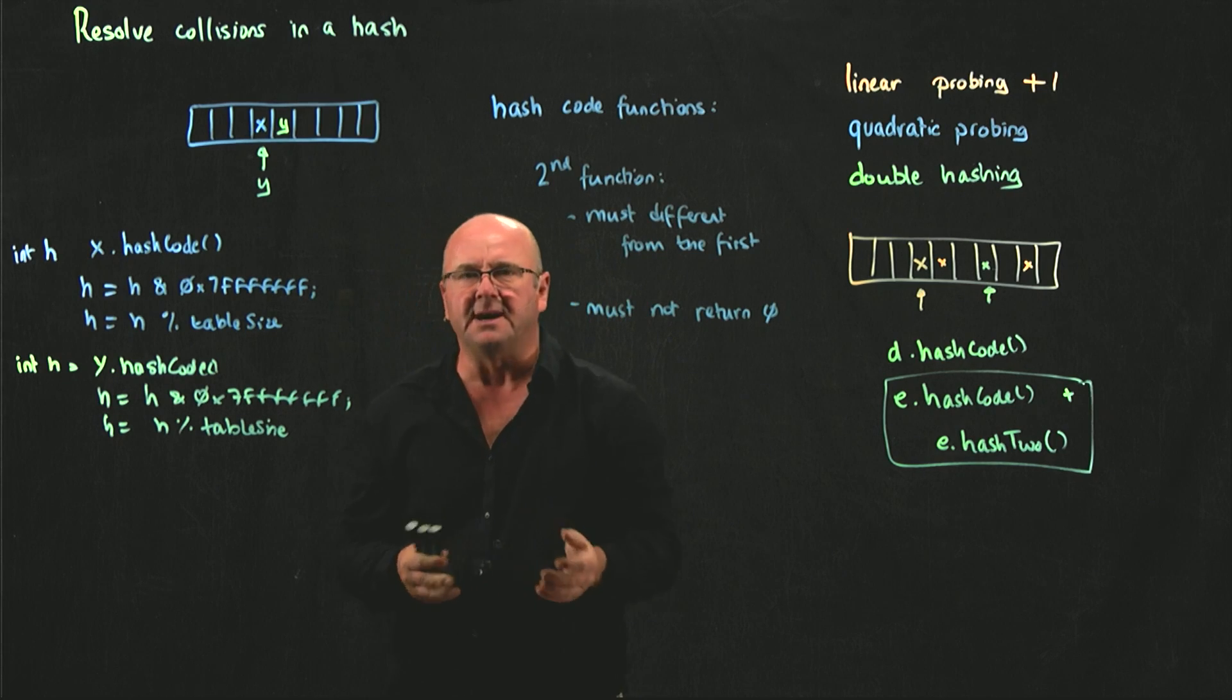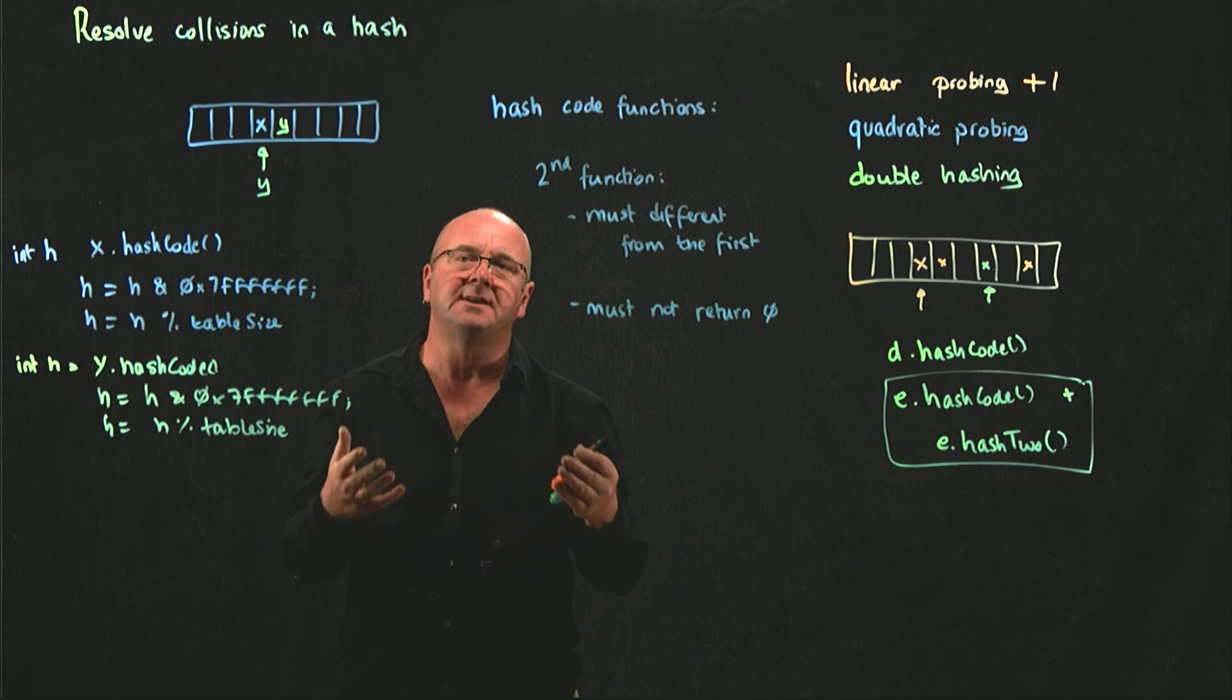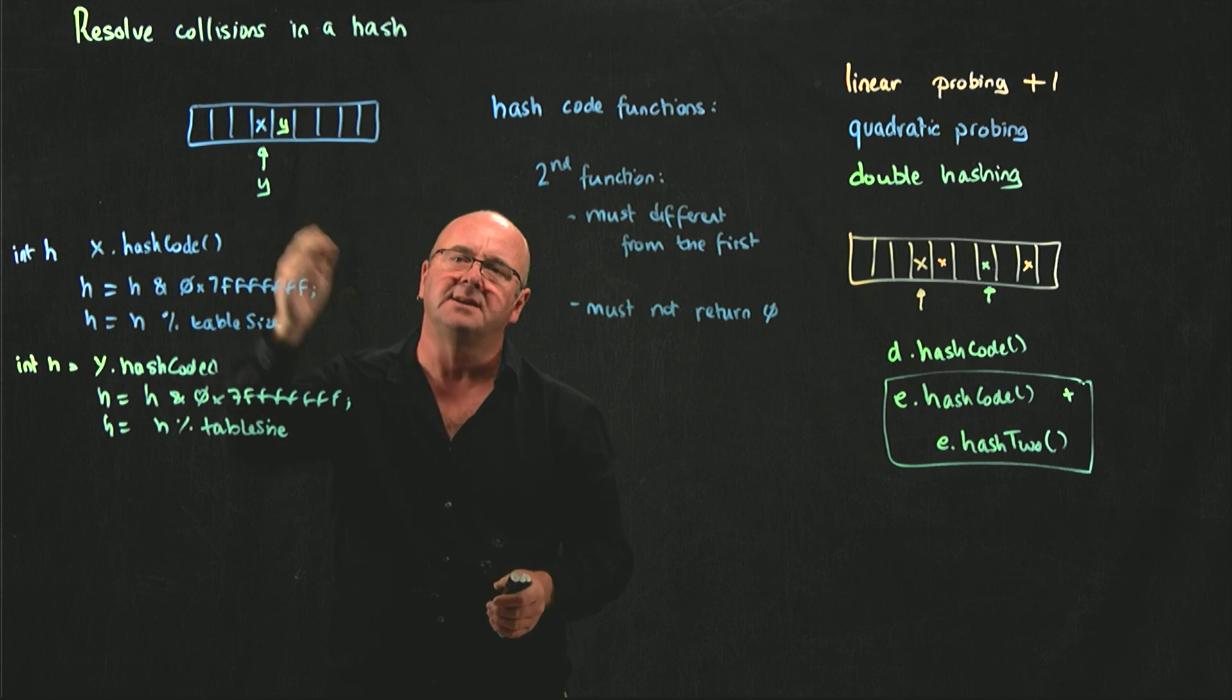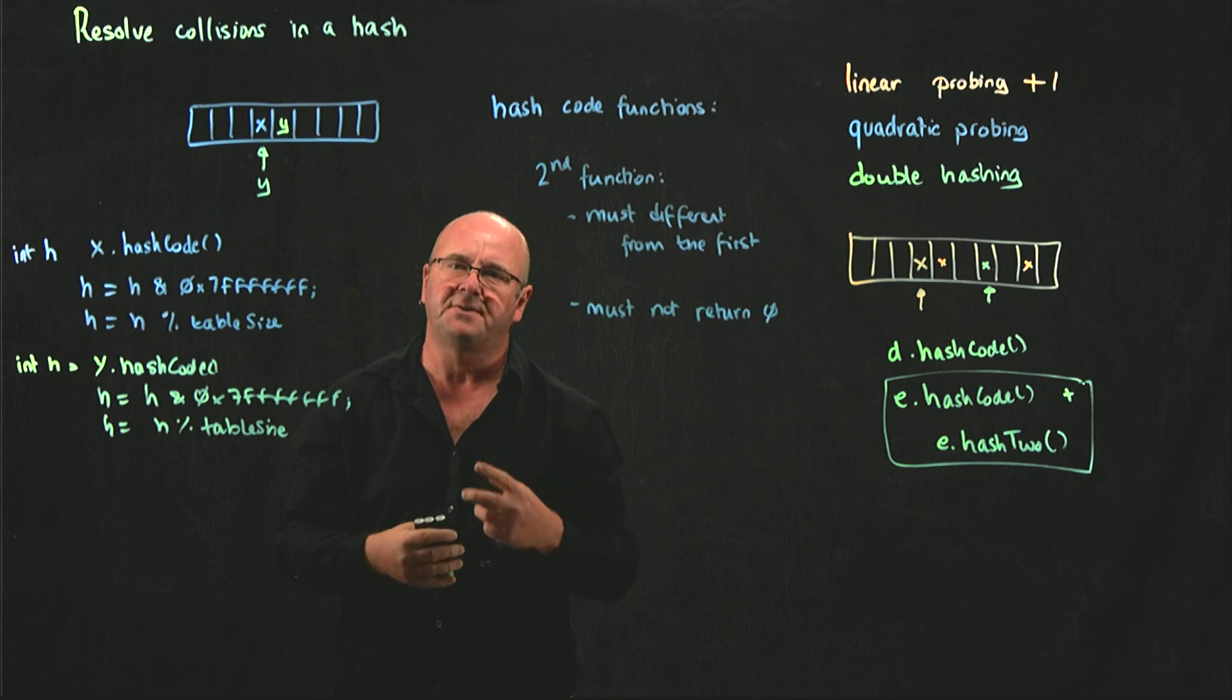But the problem with double hashing is that you have to then ensure that your data, whatever data is that's going into your data structure, has two different hash functions.